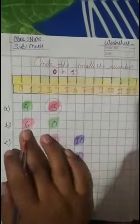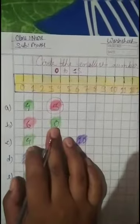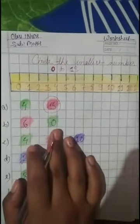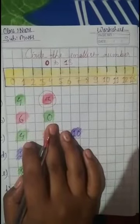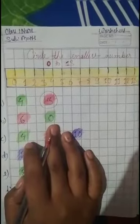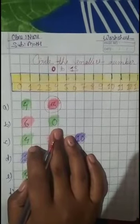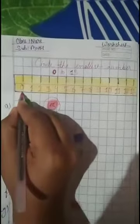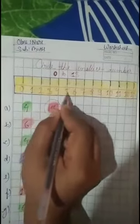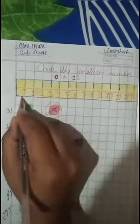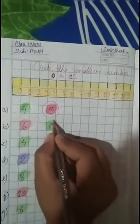Next line mein dekhen ga — 6 hai aur 0 hai. So in dono mein smallest number kaun sa hai? Jo sab se pahle aata hai woh smallest hota hai, aur jo sab se baad mein aata hai woh biggest hota hai. Sab se pahle 0 aata hai, aur 0 ke baad 1, 2, 3, 4, 5, 6 aata hai. So 0 smallest number ho gaya. So 0 ko circle kar dena hai.